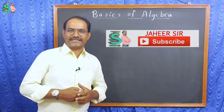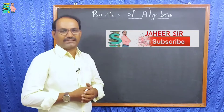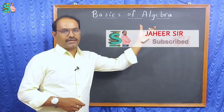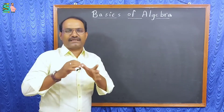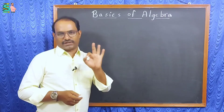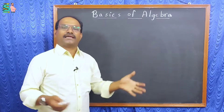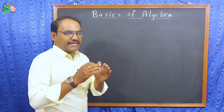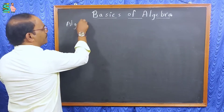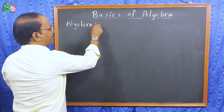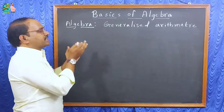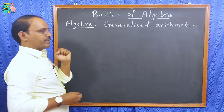Hello students, I am your Jahid Sir. Welcome to the Jahid Sauce Math class. Today I am going to explain the basics of algebra. In this, three terms are most important and there is a little confusion also. Algebra means it is a generalized arithmetic — generalized arithmetic is called algebra. In this algebra, three terms are most important.